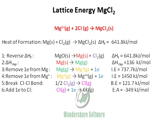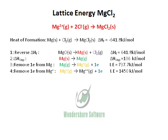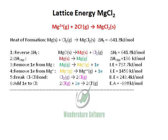We need to cancel the electrons and the Cl gas, and also balance the chlorine stoichiometry. In order to do that, we multiply equation 5 by 2 and equation 6 also by 2. When we do that, we get equations in which all the electrons and Cl gas terms, shown in the matching colors, get canceled.